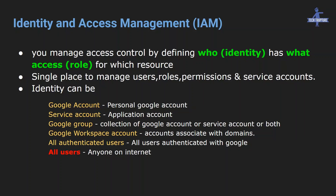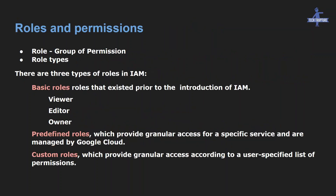Now we will look at roles and permissions. Consider a WhatsApp group where only one person has the admin role. If someone wants to remove or add a person to the group, only the admin can do that — those actions represent permissions. General users in the group cannot add or remove anyone because they don't have those permissions. IAM works the same way in Google Cloud.